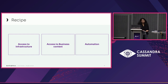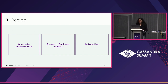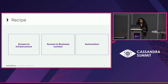So what is the recipe for it? The recipe has three ingredients: access to infrastructure, access to business context, and automation. All three are vital. Without access to infrastructure, it's just smoke and mirrors — what are you actually testing all of this on? That is the first buy-in: as an organization, we have to lean in and accept there is an infrastructure investment to this approach.